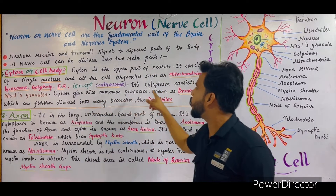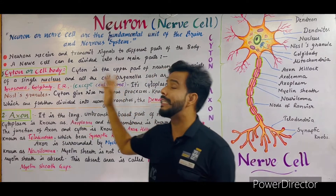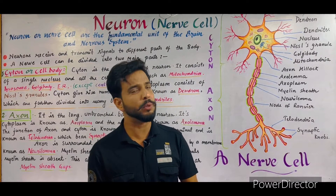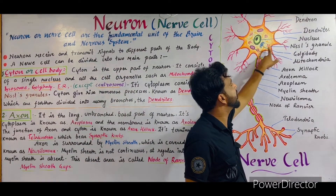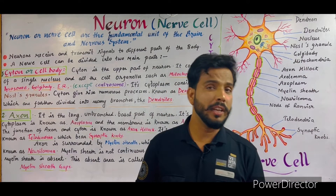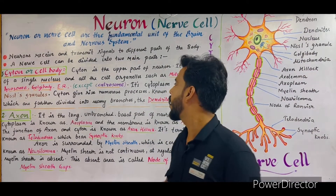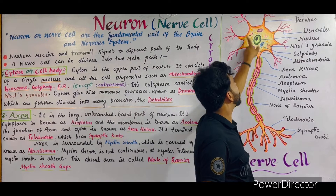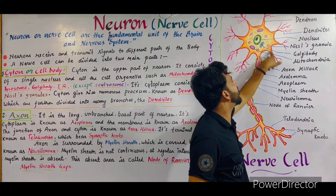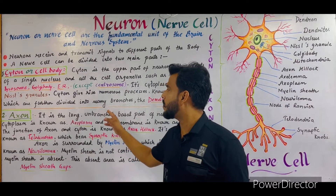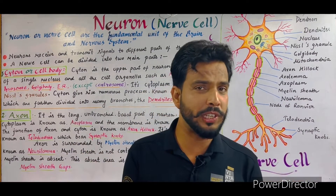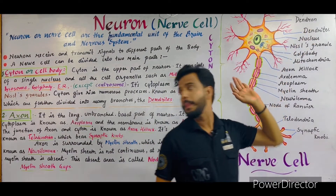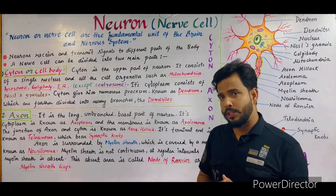The cytoplasm also consists of Nissl granules. Nissl granules are made up of endoplasmic reticulum and ribosomes — these are the red-colored structures present for protein synthesis. The cytone gives rise to numerous processes known as dendrons, as you can see here. These dendrons are further divided into many branches known as dendrites.